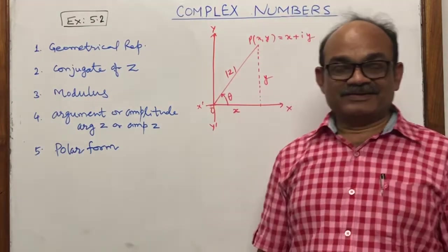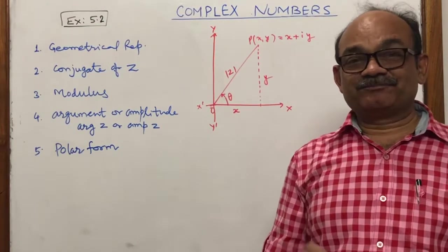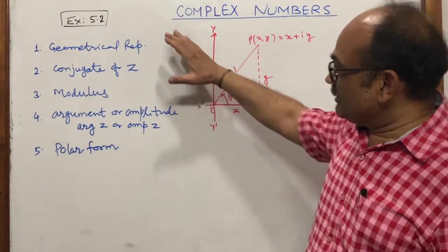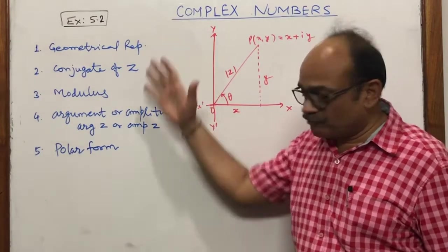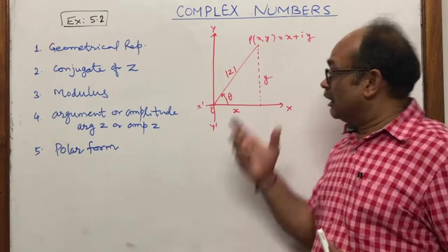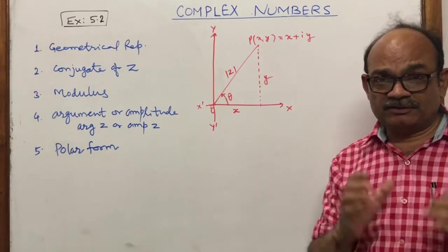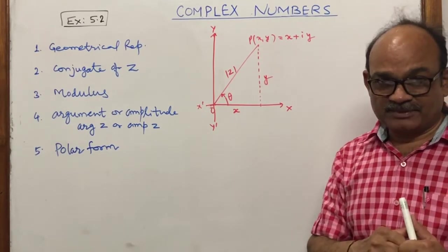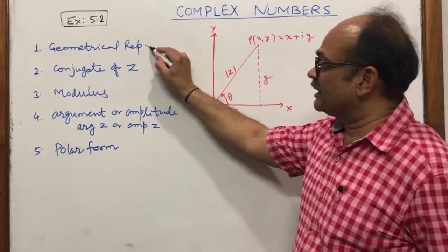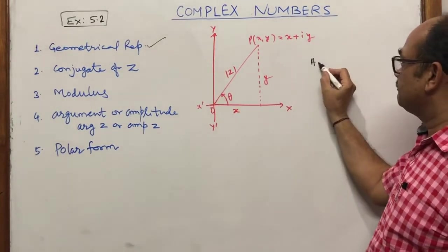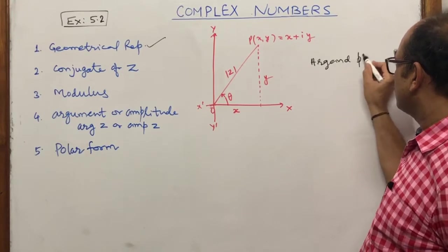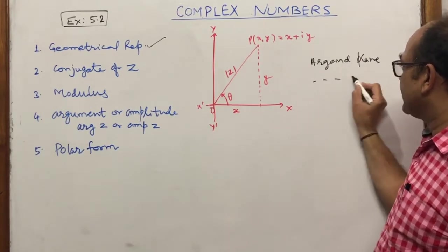Hello students. We are studying section 5.2. In this exercise we have five major important points. First, how a complex number can be represented graphically — this is called the Argand plane. The geometrical representation is known as the Argand plane or Argand diagram.